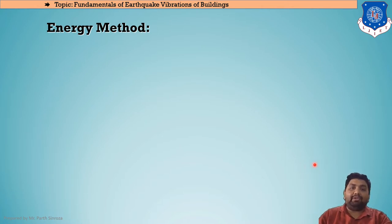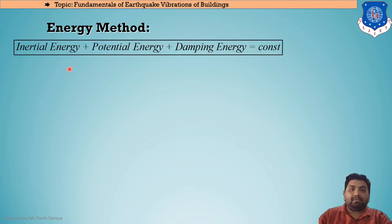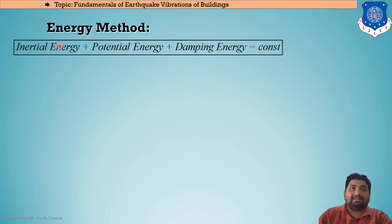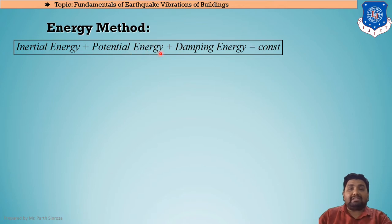The energy method states that inertial energy plus potential energy plus damping energy is always constant. This is the basic equation we will use for energy method cases. Inertial energy is energy due to inertia forces, potential energy is due to potential forces, and damping energy is due to damping forces — and their sum is always constant.